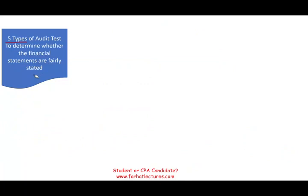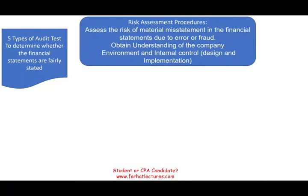So as I mentioned, today we're going to look at those five tests. The first one is the risk assessment procedure. We had almost a whole chapter about this — it's basically assessing the risk of the financial statements due to error or fraud.